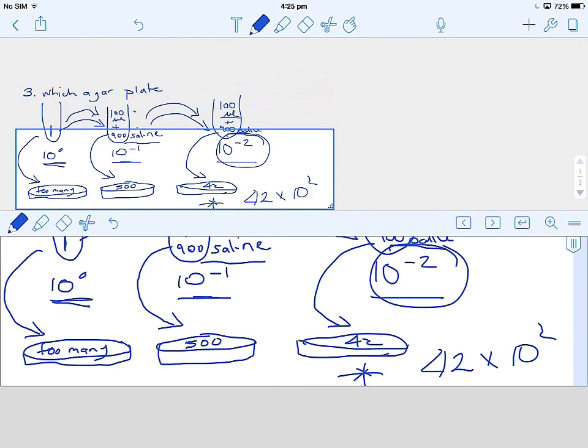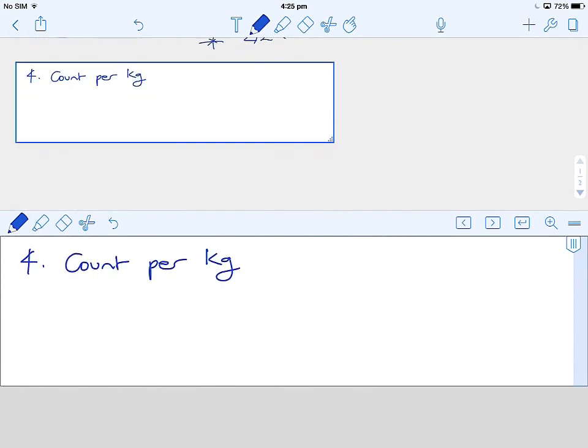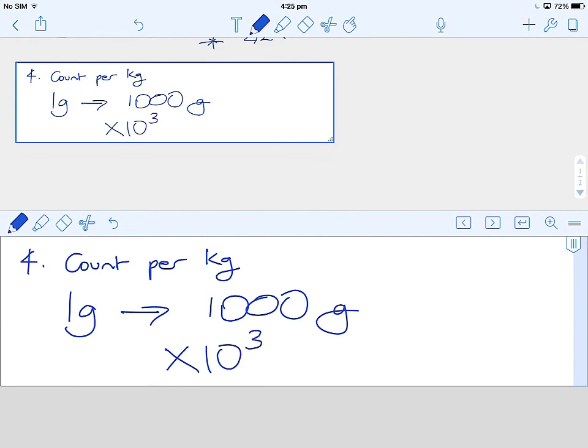Our final fourth step: it asks you to provide a count per kilogram. So far we've got a count per gram. To convert to count per kilogram, there is one gram, but we want to go up to a thousand grams. To do that, we multiply by a thousand, so that dilution factor is 10 to the 3.